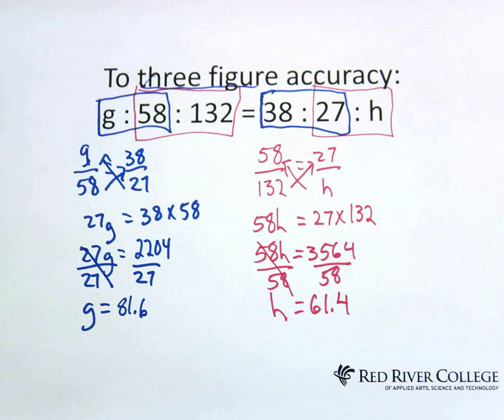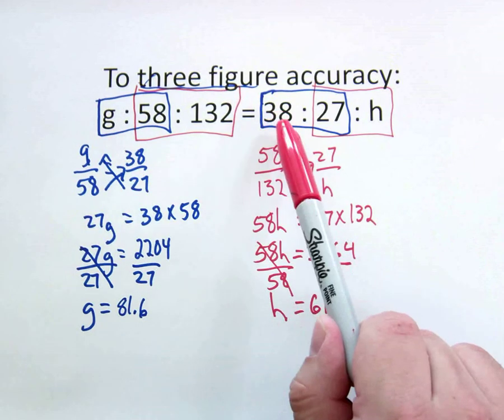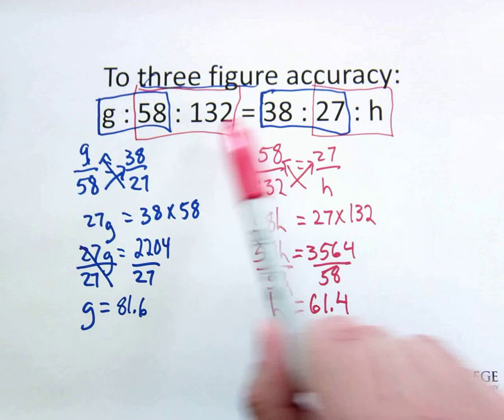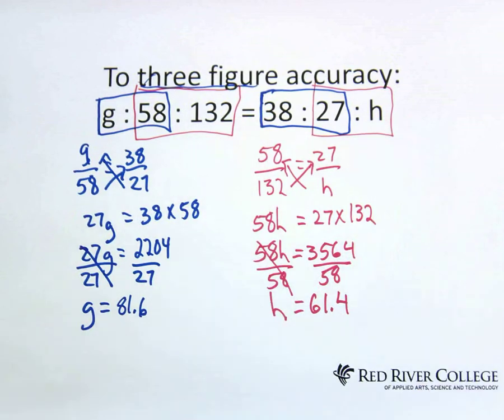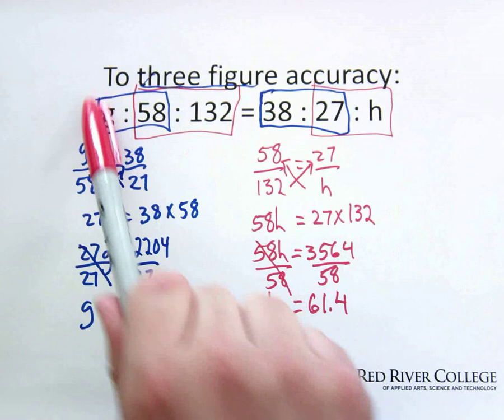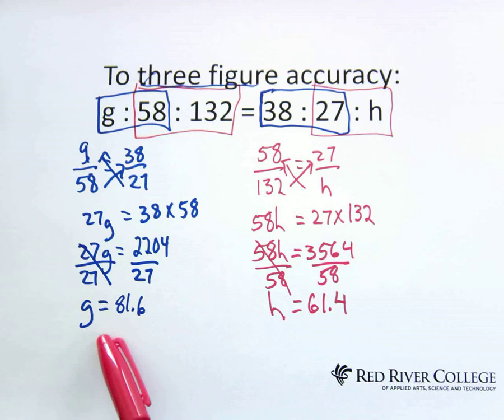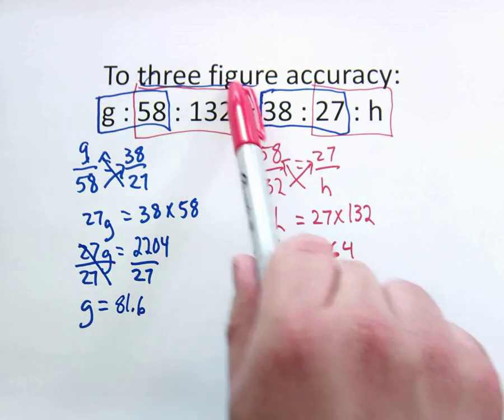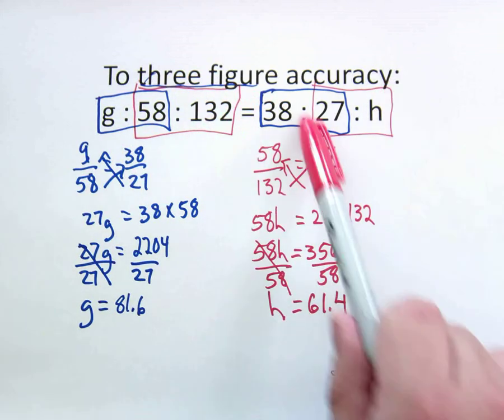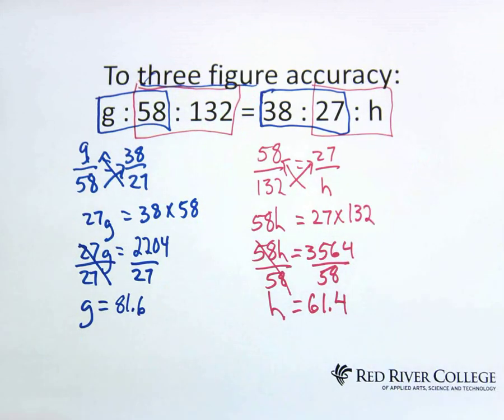So when you have a three ratio and you have two unknowns, what you have to do is just break it down into a two ratio. And then just remember the first number is comparable to the first number after the equals, the second to the second, and the third to the third. And then just break it down into two on the left and two on the right, and then work out until you get to the answer. And then when you have to do the other one, break it down again, the two on the left that match the two on the right, and then work it down to your final answer.